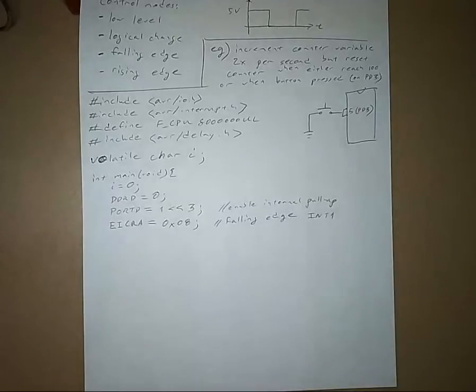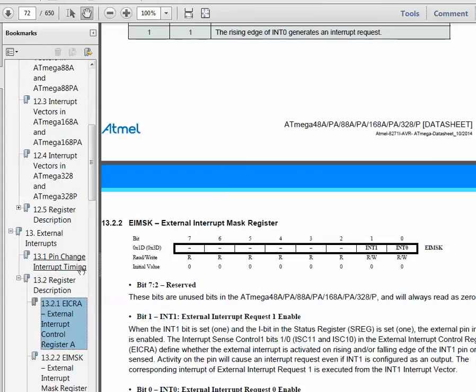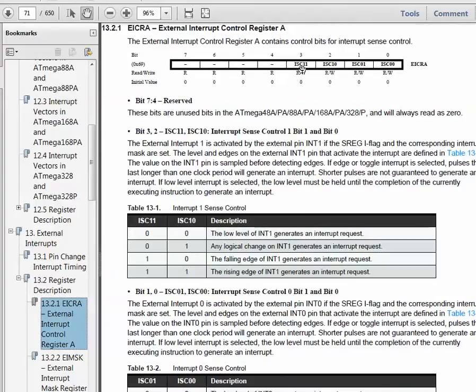So let me go back. So we assigned it an eight. And so an eight would be a one right here. And so that's one zero. So falling edge of INT1 generates an interrupt request. And we did that because INT1 is going to be high voltage all the time until the button is pressed. It's high voltage because we enabled the internal pull-up resistor. And so when the button is pressed, then that pin goes to ground. And so we want that falling edge to generate the interrupt.